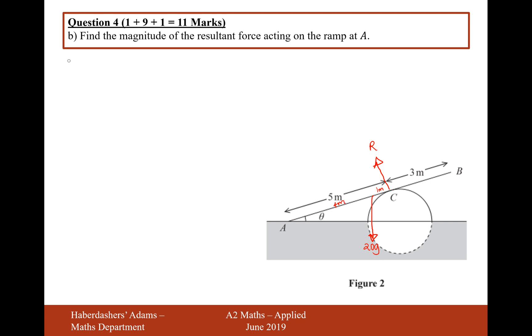We've also got tan theta is 7 over 24, so doing a bit of Pythagoras on that, if we've got 7 on the opposite side, 24 on the adjacent side, that puts 25 on the hypotenuse. So therefore sine alpha is 7 over 25, and cos alpha is 24 over 25.